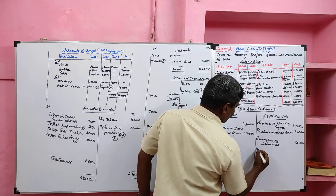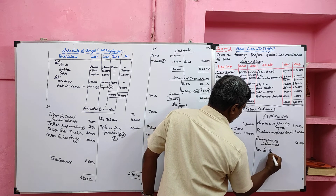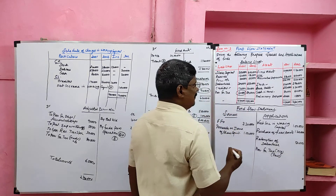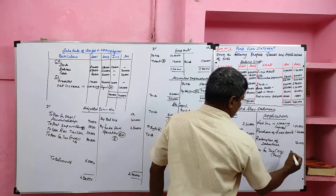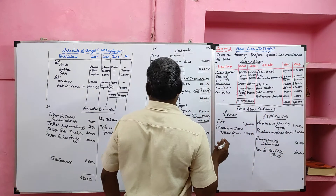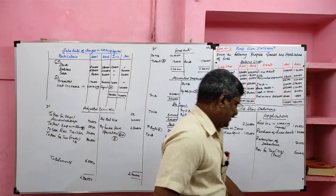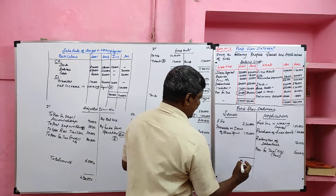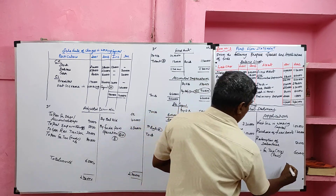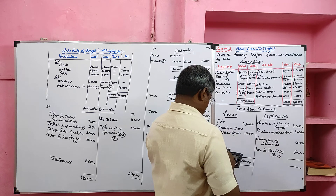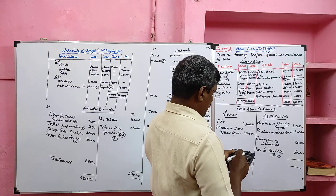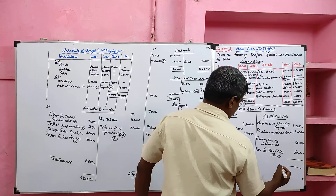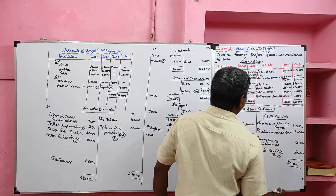The opening balance of provision for tax is assumed as paid since it was not given under current liabilities. The closing balance of provision for tax was already debited to the adjusted P&L account. Now totaling the fund flow statement: sources side total is 3 lakh 30,000. Application side: 1 lakh plus 1 lakh 20,000 plus 50,000 plus 60,000 also equals 3 lakh 30,000 - both sides match.